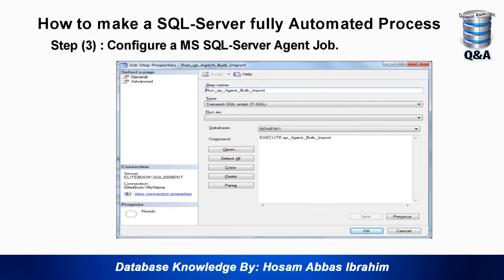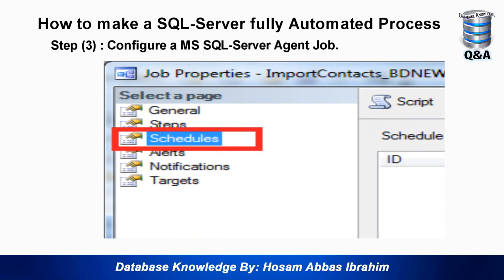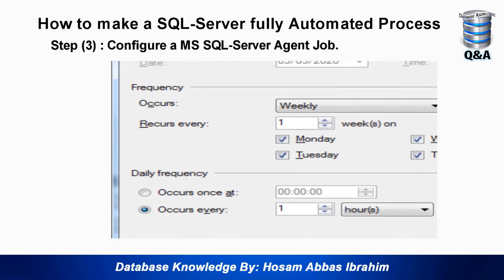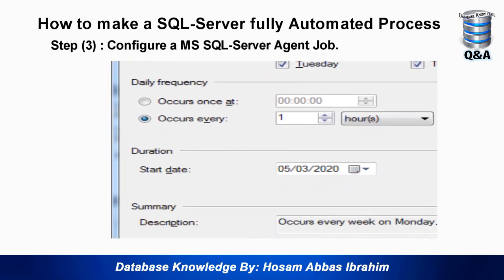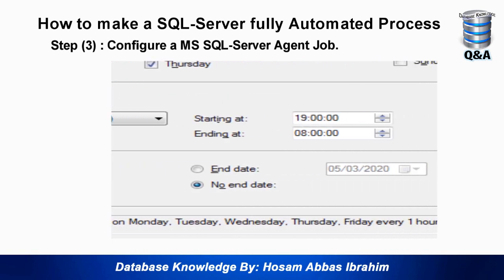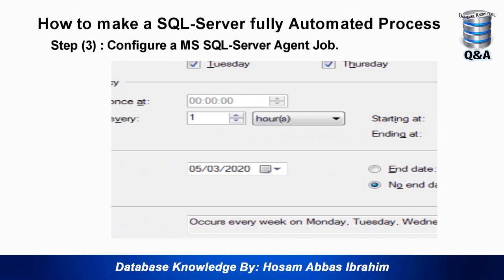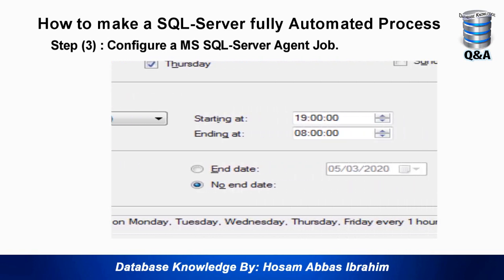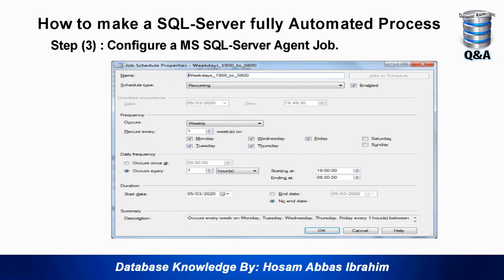Then go to Schedules and press New. Give the schedule a meaningful name. We will run this job every hour from 7 PM until 8 AM the next day, on weekdays Monday to Friday. Set it to Recurring, set frequency to Weekly, select Monday through Friday. For daily frequency, choose 'Occurs every 1 hour', starting at 19:00 and ending at 08:00 the next day. Set the start date to today and an end date if you want the job to stop at a certain date.